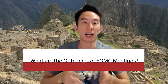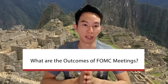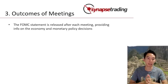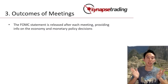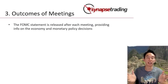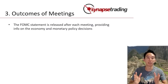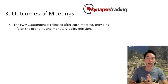So what are the outcomes of the FOMC meetings? The outcomes are typically published in a statement released after the meeting. The statement includes information about the current economic conditions, the committee's monetary policy decisions, and any other relevant information. The statement is closely watched by investors and market participants, as it provides insight into the committee's thinking and can affect the financial markets.